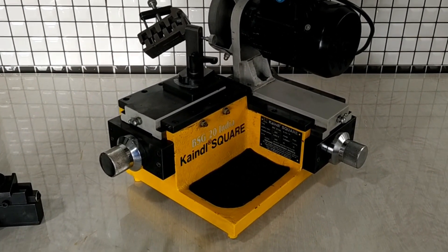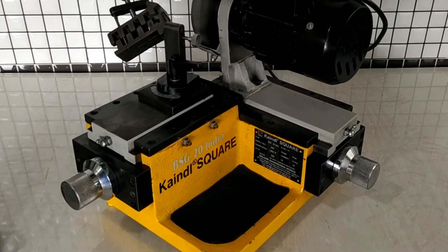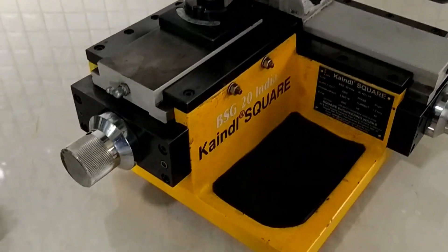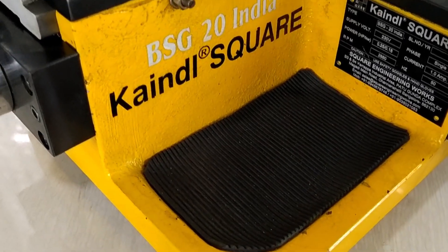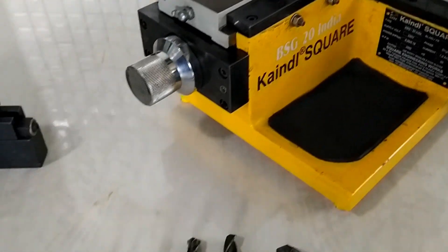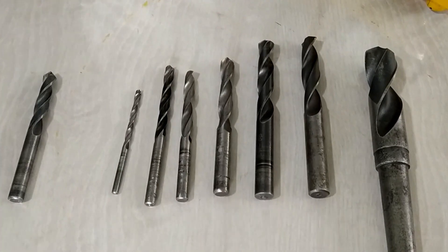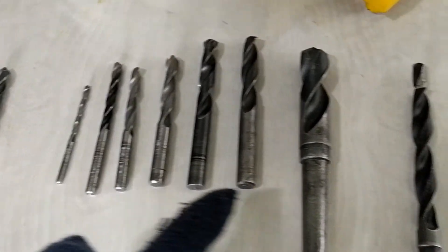Right now in front of you is the drill resharpening machine BHG20 India Easy Angles. This machine is manufactured indigenously in technical collaboration with our German principal Kendall Schliff Technik. This machine is capable of resharpening drill bits from 2mm to 20mm and end mills from 8mm to 20mm.